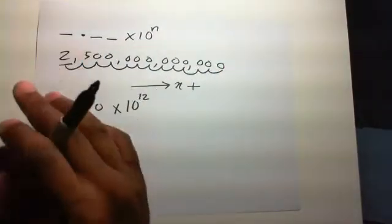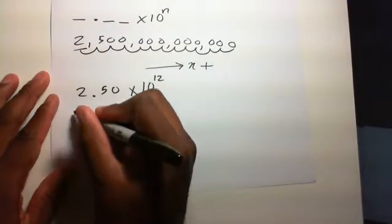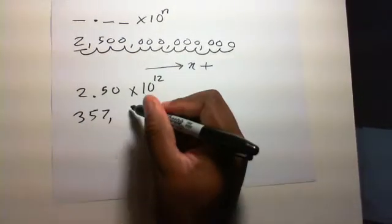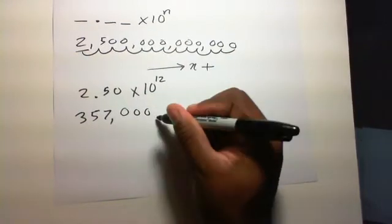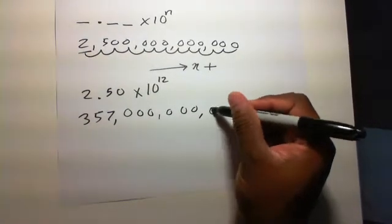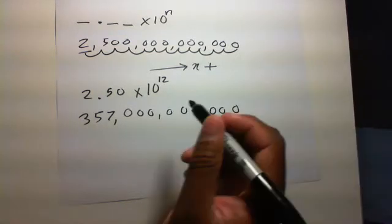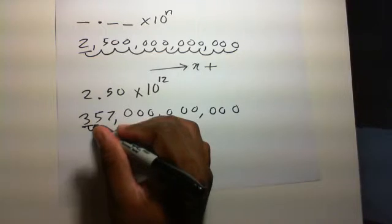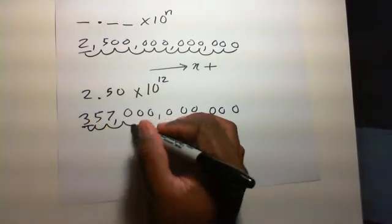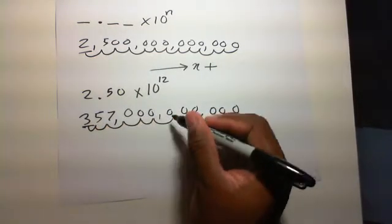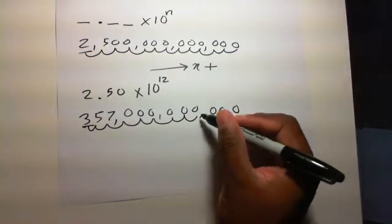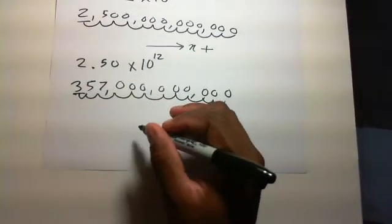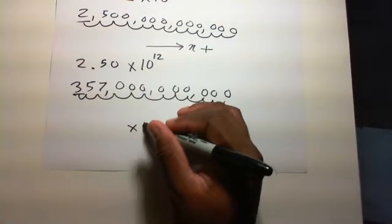Let's try that again with another number. Remember you take the leftmost non-zero digit and move it. 1, 2, 3, 4, 5, 6, 7, 8, 9, 10, 11. So this is going to be 10 to the 11th.